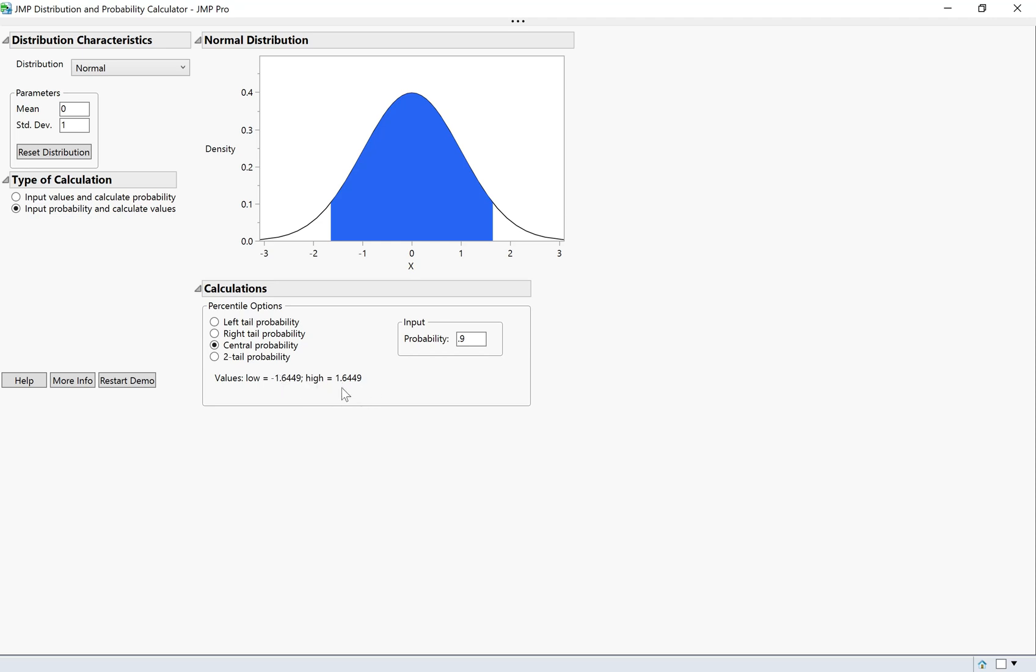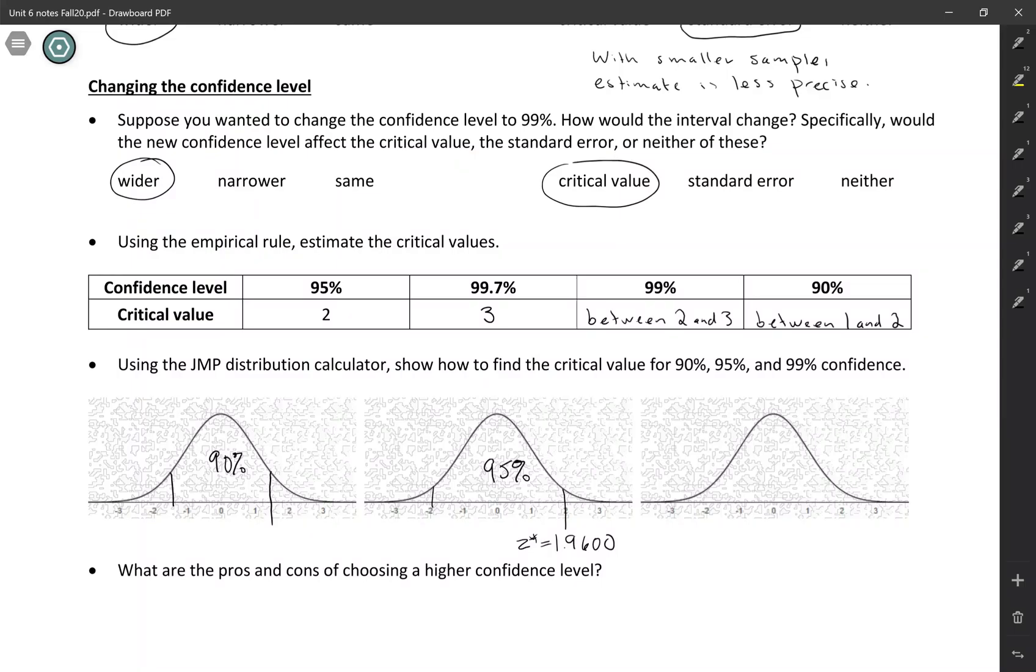By the way, notice that this gives a positive and a negative, but it doesn't matter because in our formula, we're doing plus or minus the margin of error. So whatever you plugged in wouldn't really make a difference. Usually we just use the positive value for Z star. So for 90% confidence, our critical value is 1.6449.